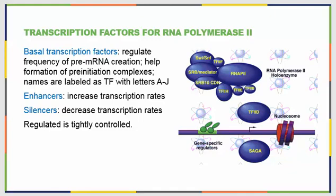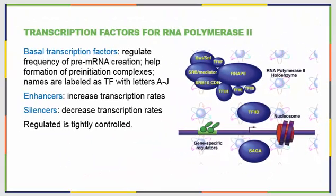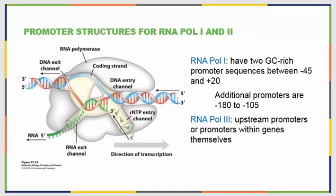Basal transcription factors help with the formation of pre-initiation complexes and are labeled TF in books and pictures. We have TF1s for those that bind with RNA Pol 1, and TF2s — with letters tacked onto the end. For example, TF2D is the fourth transcription factor known to bind with RNA Pol 2. There are also enhancers that increase transcription rates and silencers that decrease them. RNA Pol 1 has two GC-rich promoter sequences between negative 45 and plus 20, with additional promoters around negative 180 and negative 105. Pol 3 has upstream promoters and even some promoters found within genes themselves.